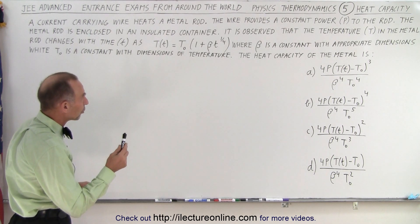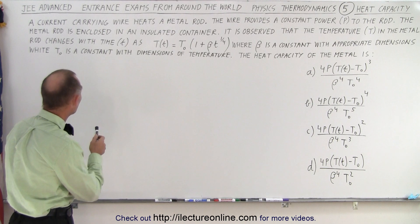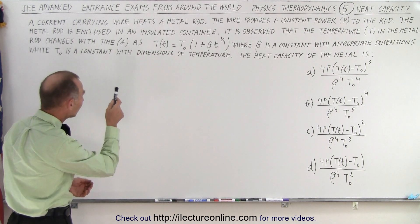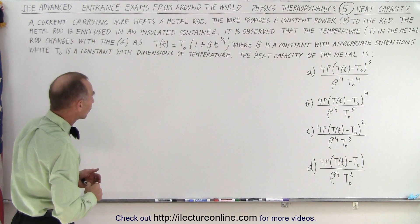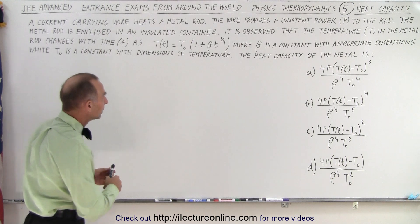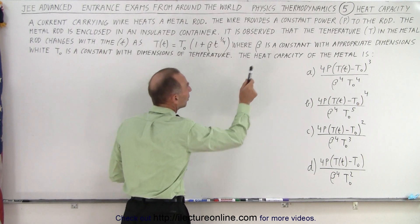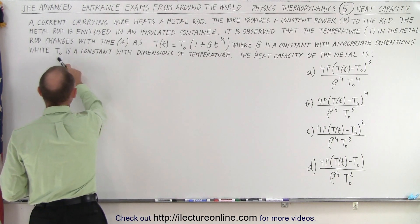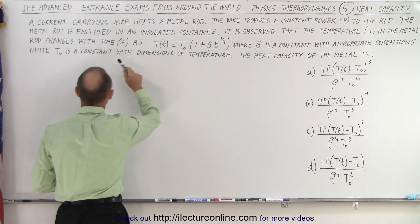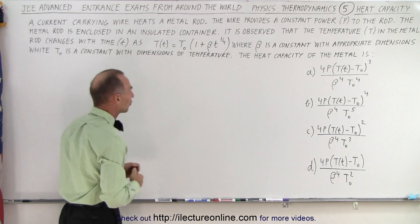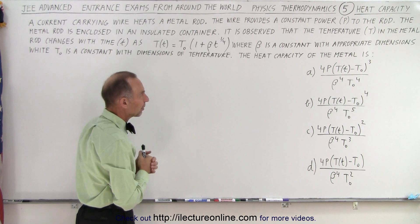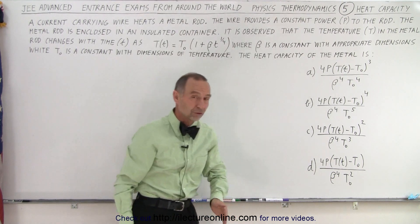It is observed that the temperature T in the metal rod changes with time as that equation indicates, where beta is a constant with appropriate dimensions and T naught is a constant with dimensions of temperature. The heat capacity of the metal is one of these four choices.